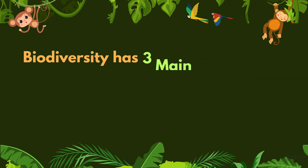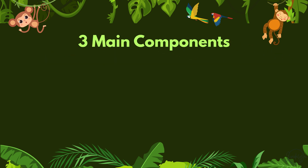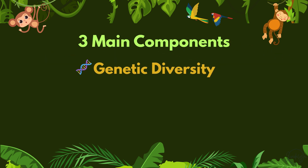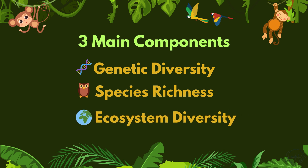Biodiversity has three main components: genetic diversity, species richness, and ecosystem diversity. Let's break them down.